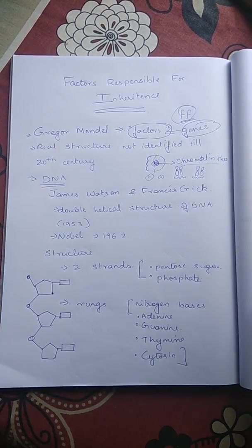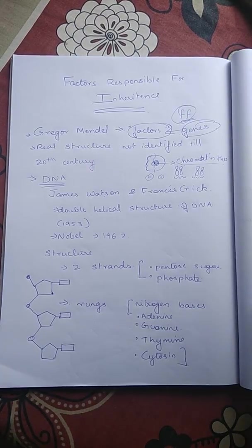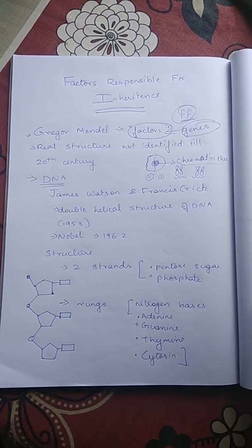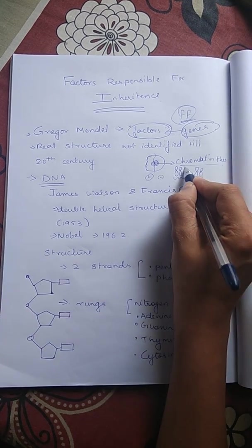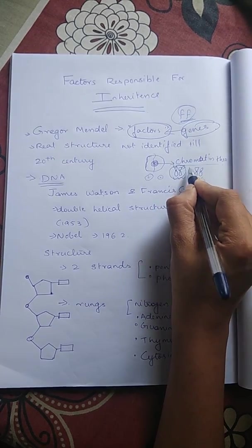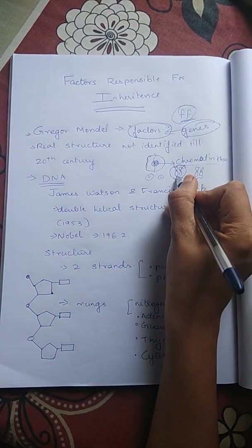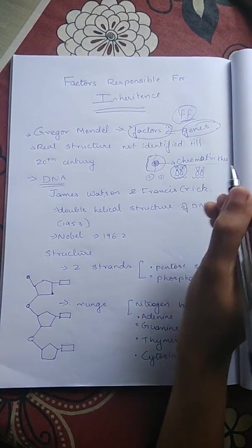In human beings, there are 23 pairs of chromosomes. That is 23 into 2, which is 46 chromosomes in human beings. Because there are two chromosomes — two identical chromosomes in each pair.